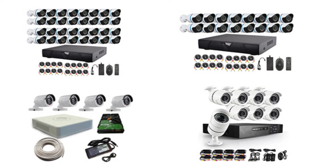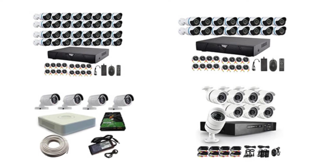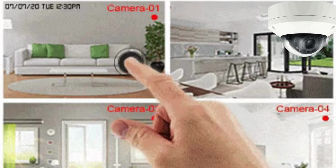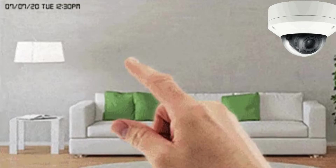In a DVR setup, coaxial cables are frequently used to transmit video signals from security cameras to the DVR unit. The typical connection involves running coaxial cables from each camera to the DVR. The DVR then processes and records the incoming video signals from these cameras. This setup is often found in traditional CCTV systems where analog cameras are connected to the DVR via coaxial cables, unlike IP cameras which are connected to an NVR.